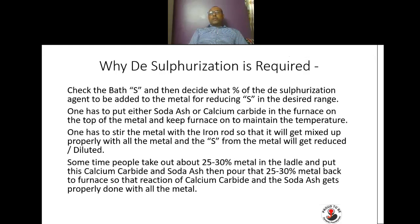First, check the bath sulfur and then decide what percentage of desulphurization agent is to be used. To reduce sulfur to the desired range, put either soda ash or calcium carbide on top of the metal in the furnace and keep the furnace on to maintain temperature. Stir the metal with an iron rod so it gets mixed properly with all the metal in the furnace, and the sulfur from the metal gets reduced.